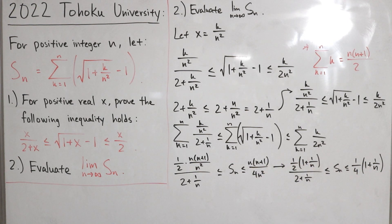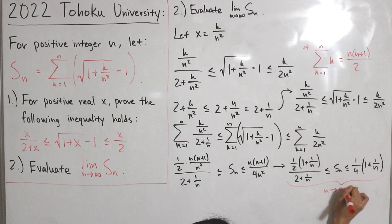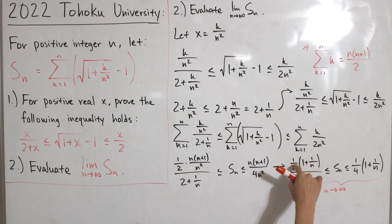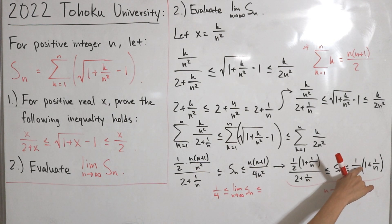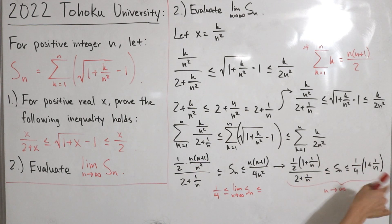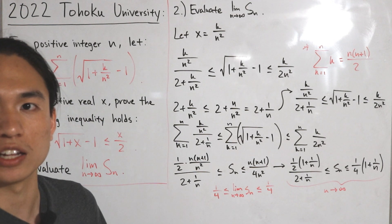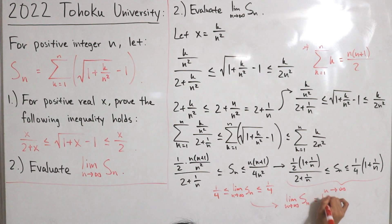Taking the limit as n → ∞, note that 1/n → 0. The left side approaches (1/2) · 1/(2) = 1/4, and the right side approaches (1/4) · 1 = 1/4. So we have 1/4 ≤ lim S(n) ≤ 1/4. By the squeeze theorem, the limit as n approaches infinity of S(n) equals 1/4.